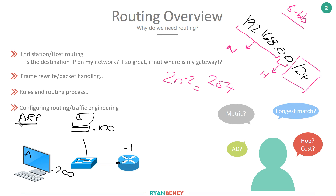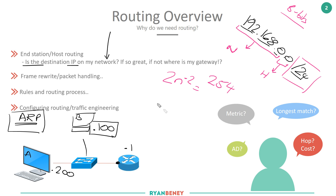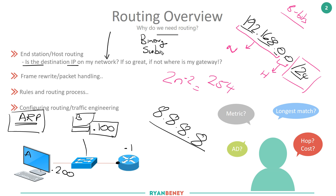To know who to ARP for, we ask a simple question: is the destination IP on our network — as in, is it in the 192.168.0.0/24 range? If it is, then I can ARP directly for it, sending an ARP asking for the MAC address of 192.168.0.100. If the host is not on my network — let's say it's 8.8.8.8 — then I can do a binary AND calculation using the subnet mask, and from that I can determine that 8.8.8.8 is not on my network, so I'll need to ARP for my default gateway and send the traffic there.